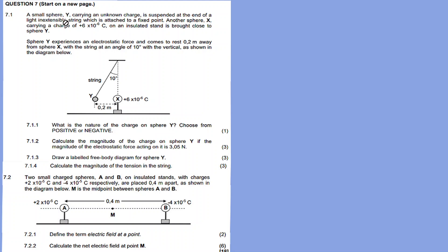A small charge Y, carrying an unknown charge, is suspended at the end of a light inextensible string which is attached to a fixed point. Another sphere X, carrying a charge of plus 6 times 10 to the exponent minus 6 coulombs, on an isolated stand is brought close to sphere Y.